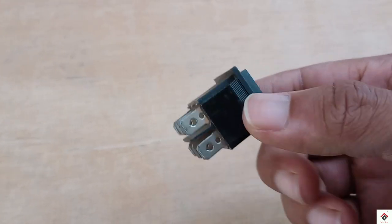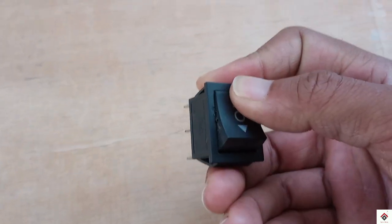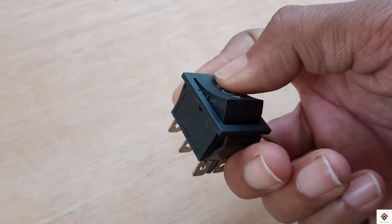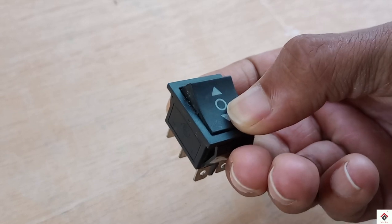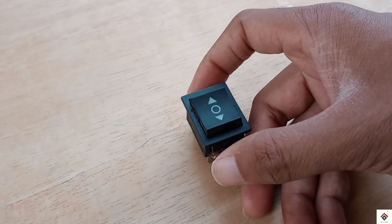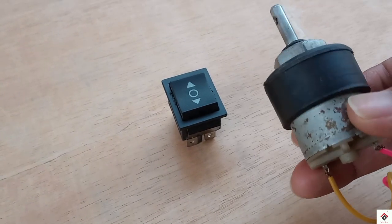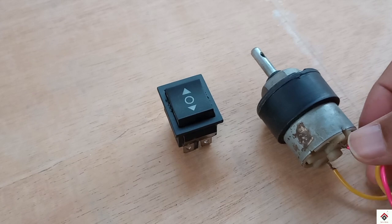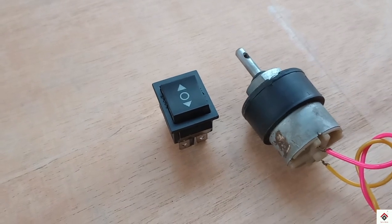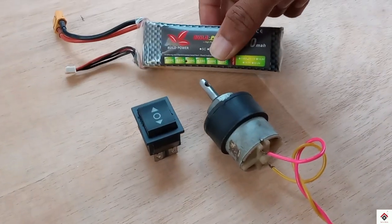Using one switch itself you can control any kind of DC motor in forward and backward direction. Just to demonstrate, I have taken a 12 volt DC gear motor with an 11.1 volt LiPo battery.